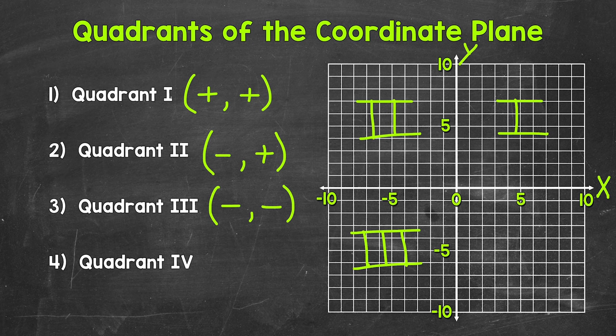Lastly, let's move on to quadrant 4, which is the lower right quadrant — this is quadrant 4 right here. For quadrant 4, the x-coordinates are positive and the y-coordinates are negative. So if the x-coordinate is positive and the y-coordinate is negative, then the point will be in quadrant 4.